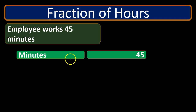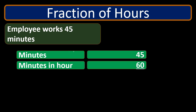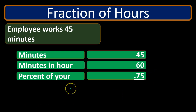So to do that, if we have an employee that worked 45 minutes, we divide that by the number of minutes in an hour, 60. The 45 divided by 60 gives us 0.75, which is the fraction of an hour — so 0.75 of an hour.